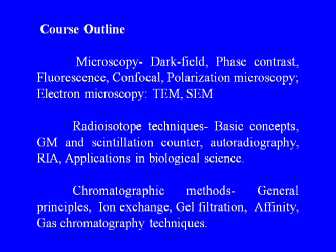The course outline covers the following techniques. First, microscopy — including basic concepts, and specific techniques like dark field, phase contrast, fluorescence, confocal, polarization microscopy in light microscopy, and transmission and scanning electron microscopy. Radioisotope techniques will cover basic concepts, Geiger-Muller and scintillation counters, autoradiography, radioimmunoassay, applications in biological sciences, and safety issues.